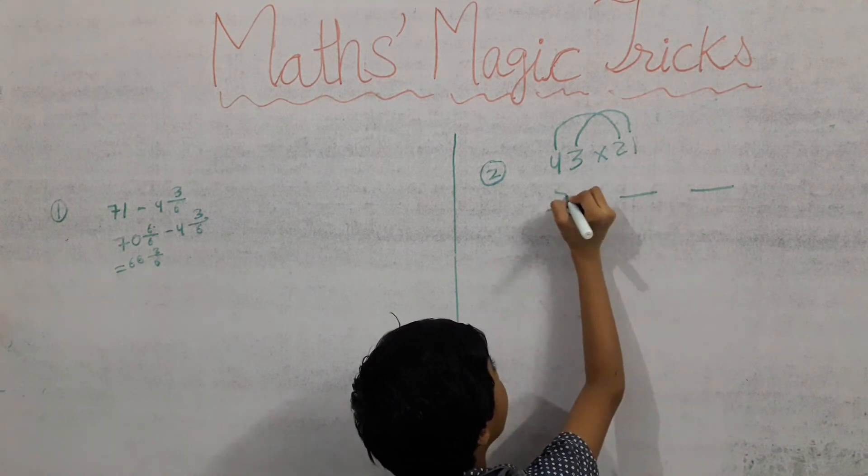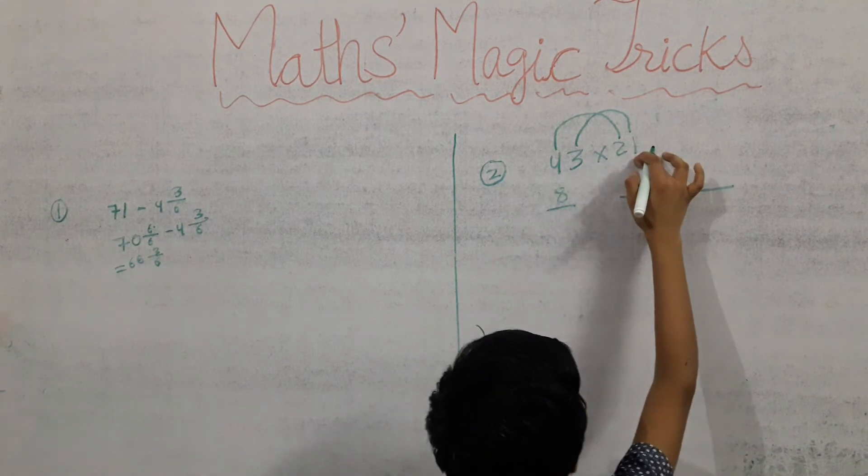Four multiply two is equal to eight, and three multiply by one is equal to three.